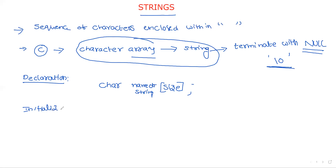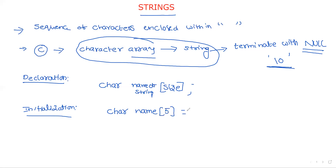There are two ways of initialization: compile-time initialization and runtime initialization, which is the second one. For compile-time initialization we use two procedures. Observe the two procedures carefully. For example: char name[5] — we can initialize the string in the form of an array.